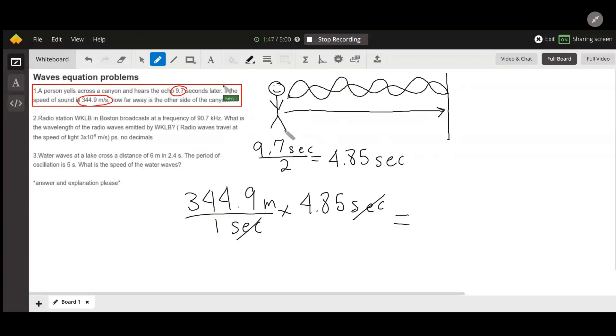It's really important to divide the original time by 2 or else you would get double the length. We don't want that. So these numbers multiplied together give you 1,672.765 meters.